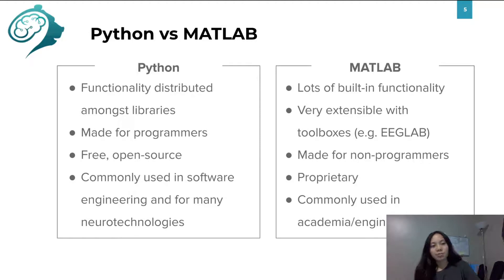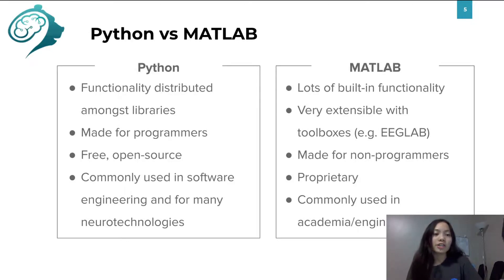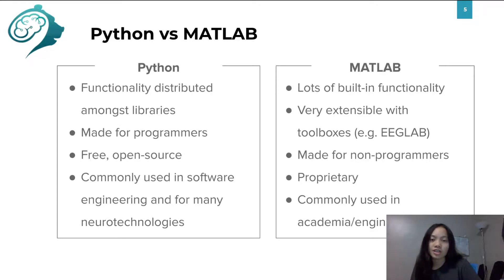Python is free and open source. In contrast, MATLAB is expensive to use since it's a proprietary language. Python is commonly used in software engineering and for many types of commercial neurotechnologies for EEG data analysis. Meanwhile, MATLAB is commonly used in academia and engineering, and many neuroscience researchers use MATLAB. Each language has its pros and cons, but with both of them, you can essentially accomplish the same goals for your EEG data analysis.